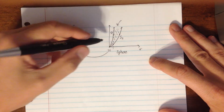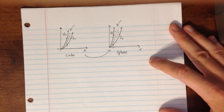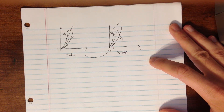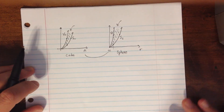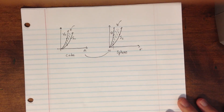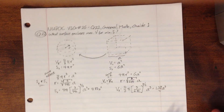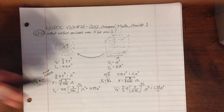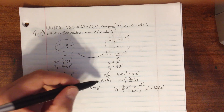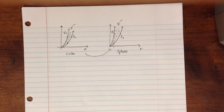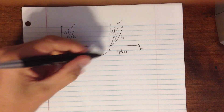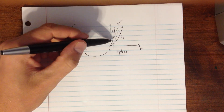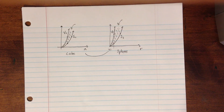Those are a couple of ways to show that the sphere is the shape that encloses the maximum volume for the minimum surface area. For a given volume, no shape has less surface area. For a given surface area, no shape has more volume. And no other shape has faster-growing volume with respect to its surface area.